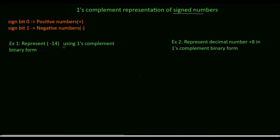In this tutorial we will see how to represent signed numbers in one's complement form. The sign bit is 0 for positive numbers and 1 for negative numbers.